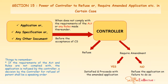First, let's look at Section 15: Power of Controller to refuse or require amended application in certain cases. If any application, specification, or other document does not comply with the requirements of the Act or any rules, before the acceptance of the complete specification, i.e. before granting, the controller may refuse the application or may ask for amendment to comply with the requirements under the Act.